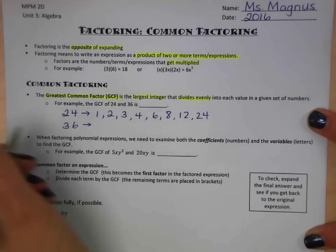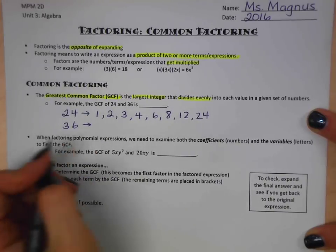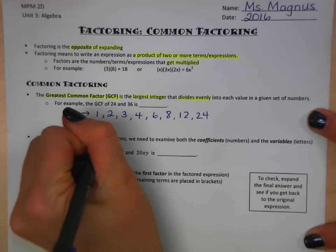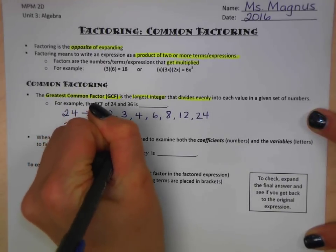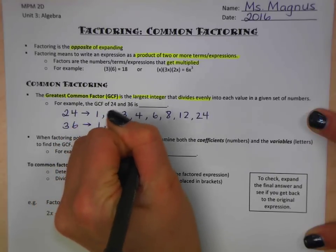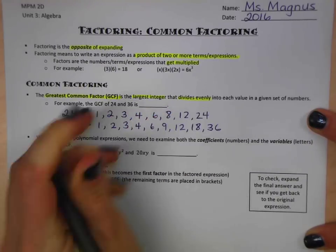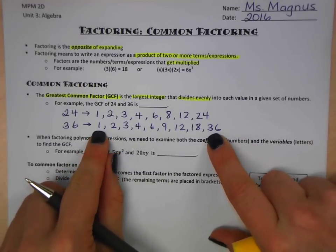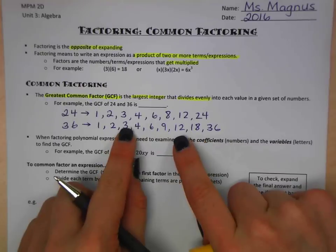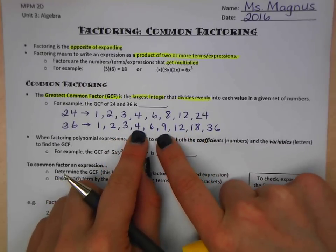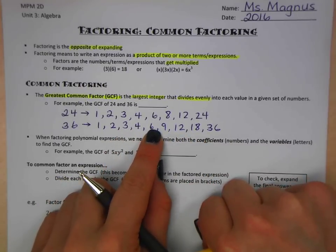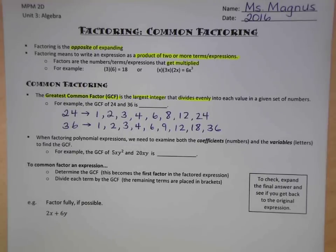Now 36. The factors of 36, so numbers that multiply together to give us 36. Again, 1 times 36 is 36, 2 times 18, 3 times 12, 4 times 9, and 6 times 6. So all of those numbers multiply together to give us 36.